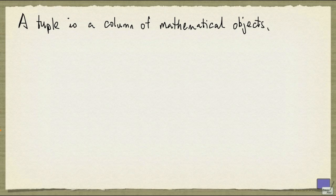Loosely speaking, a tuple is a column of mathematical objects. If a tuple has n entries, it's called an n-tuple.